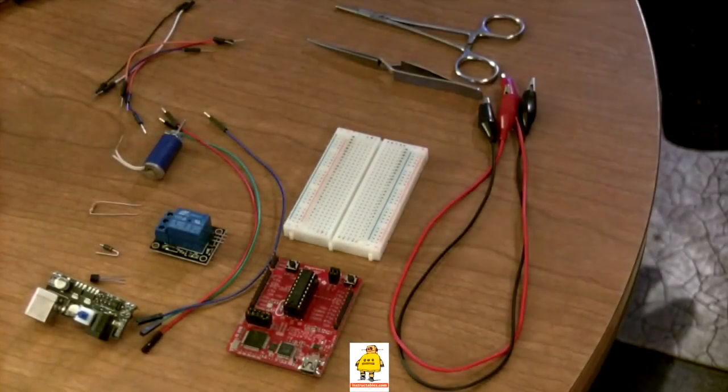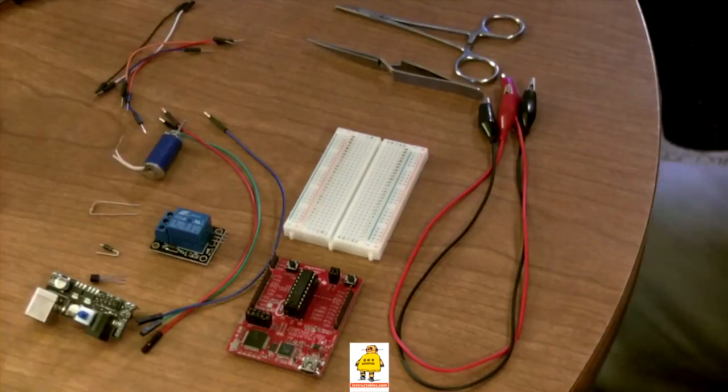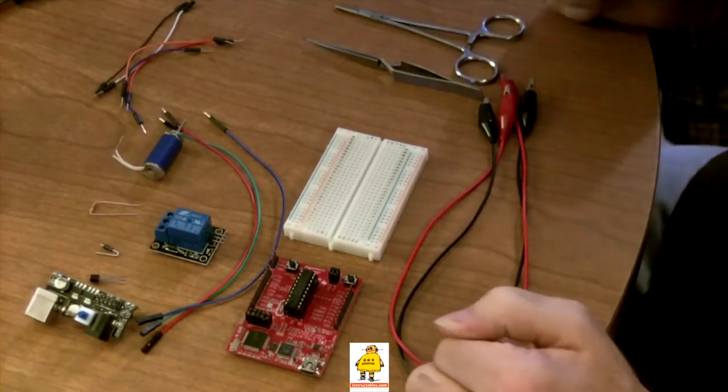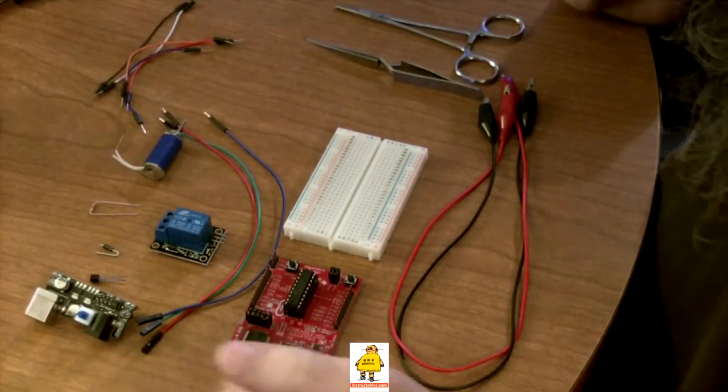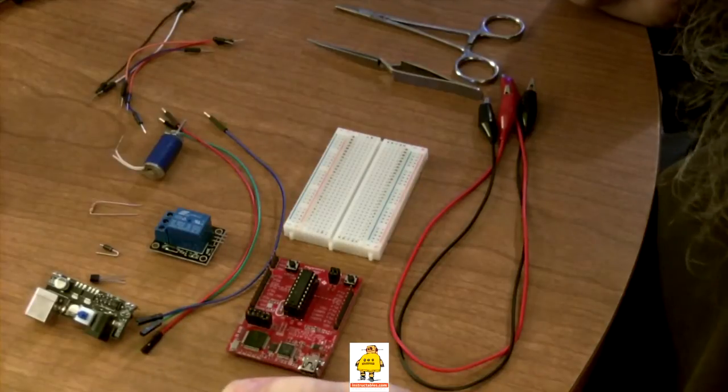Okay, we're going to construct the circuit that is going to drive the solenoid which will press the button on our Xbox 360 controller.